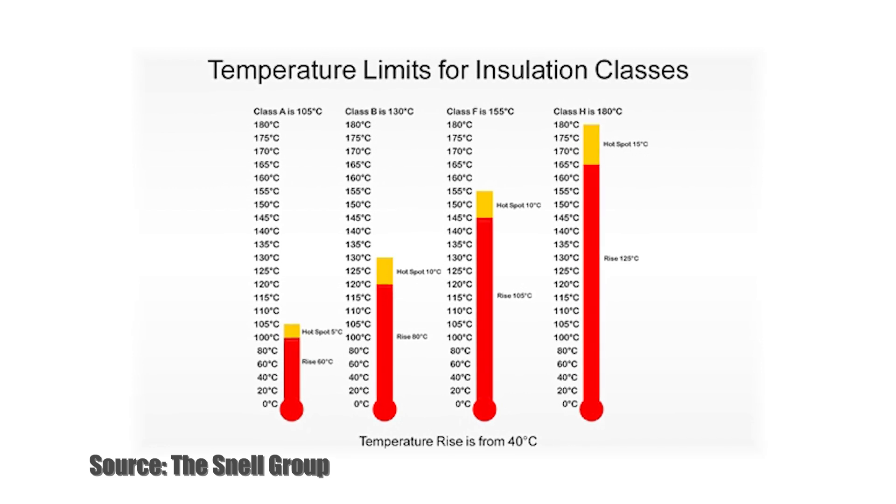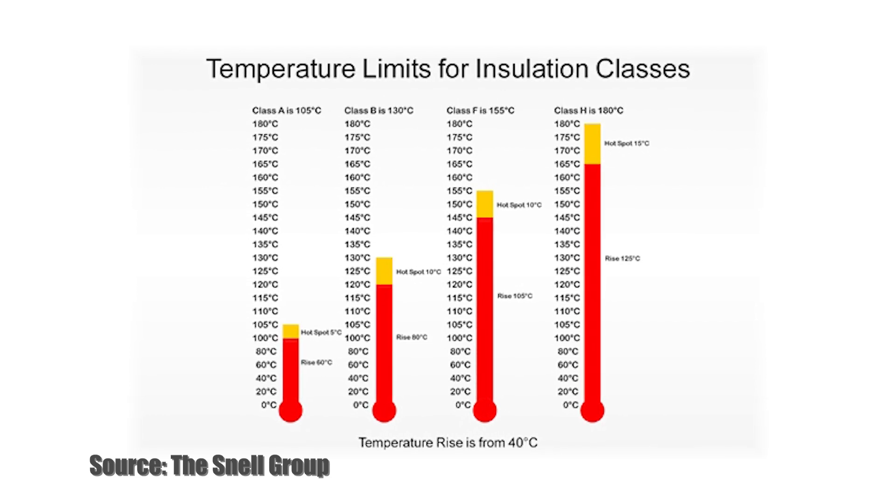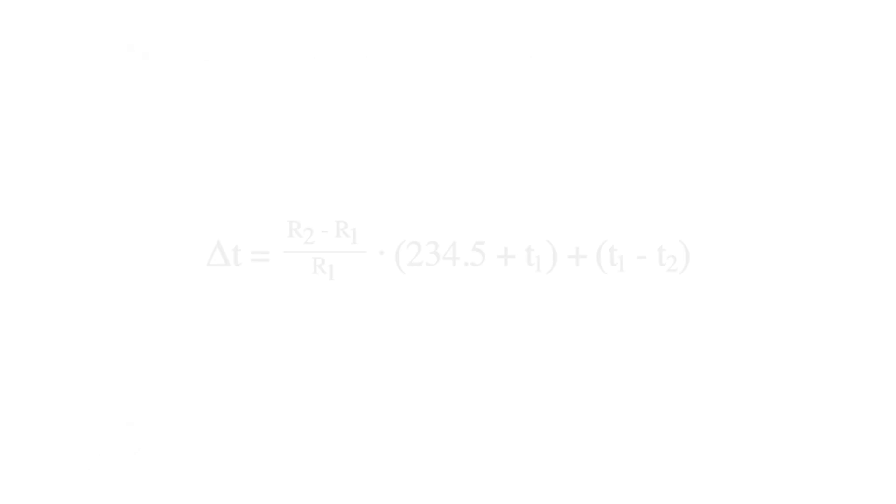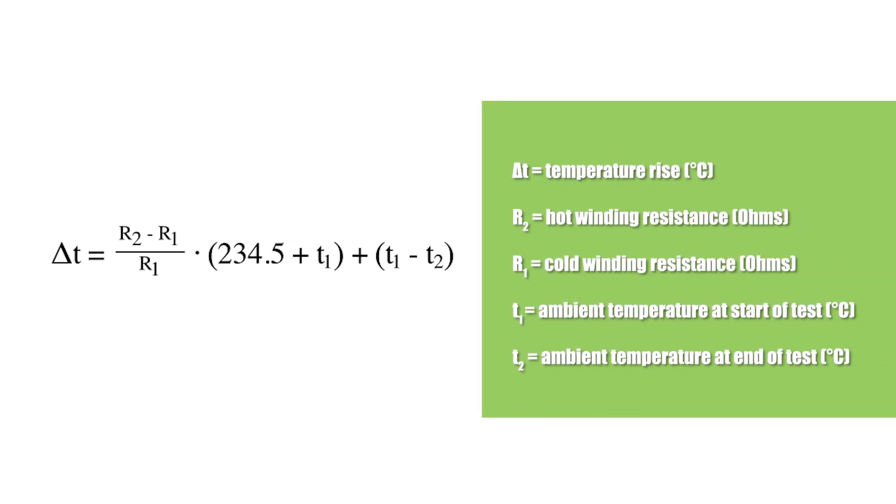However, adjustment tables and calculations are available to determine the reduced maximum operating temperature for conditions outside of those specified by the insulation class. Temperature rise is calculated based on the change in resistance of the windings, with a correction for any change in ambient temperature between the start and the end of the test.